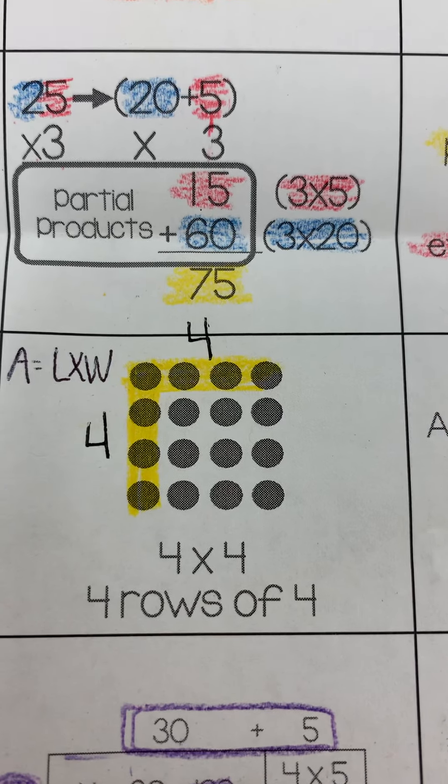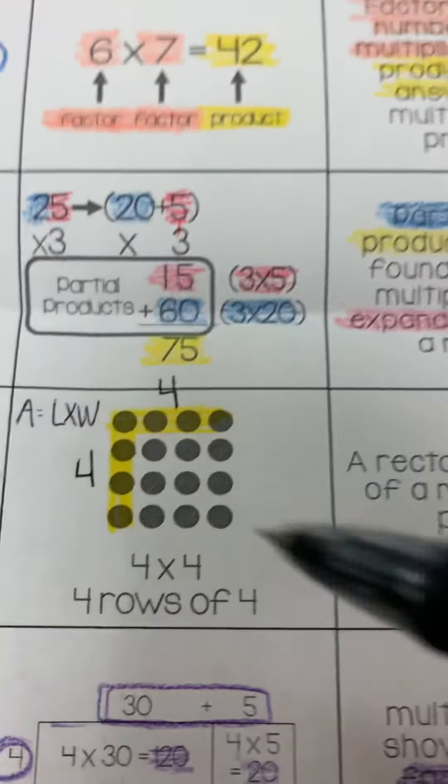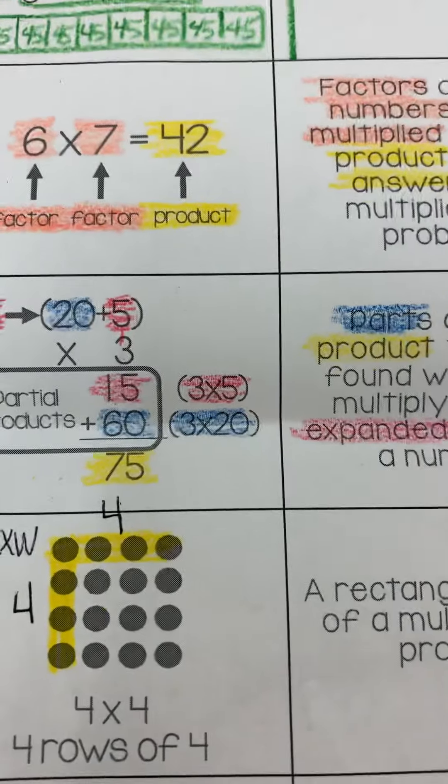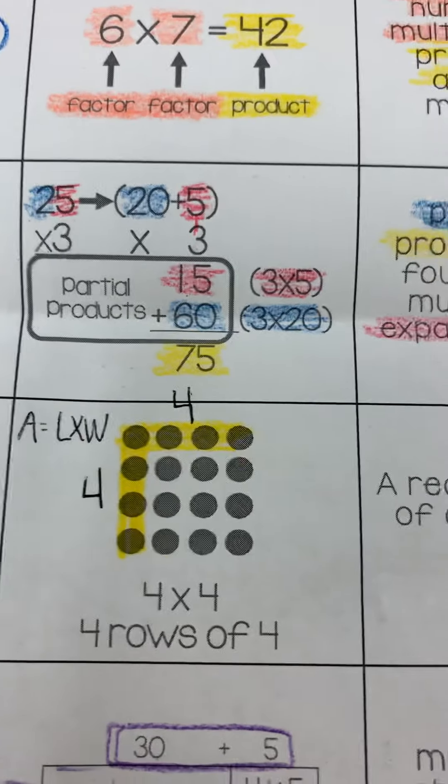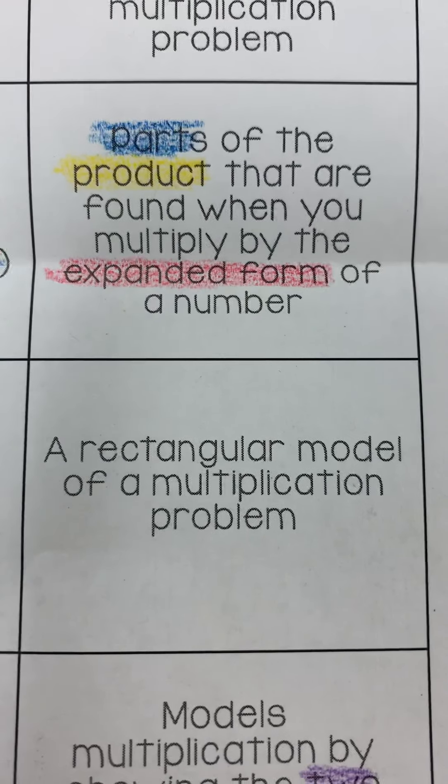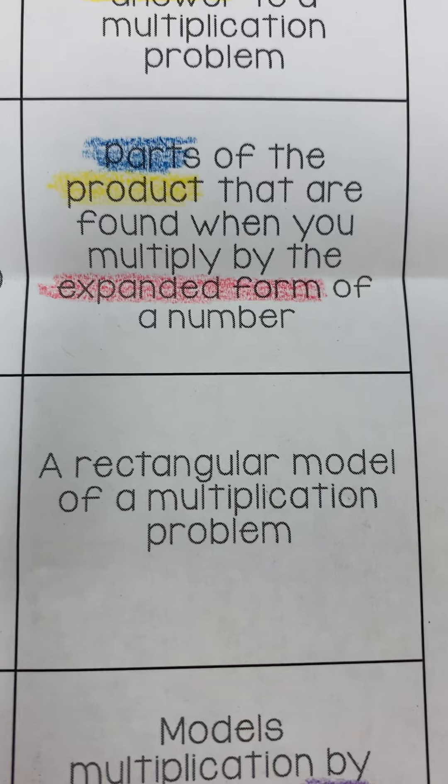The way you find area is length times width. Well, isn't that the same as the array? Absolutely. So once again, array and area model are the same. An array is a rectangular model of a multiplication problem.